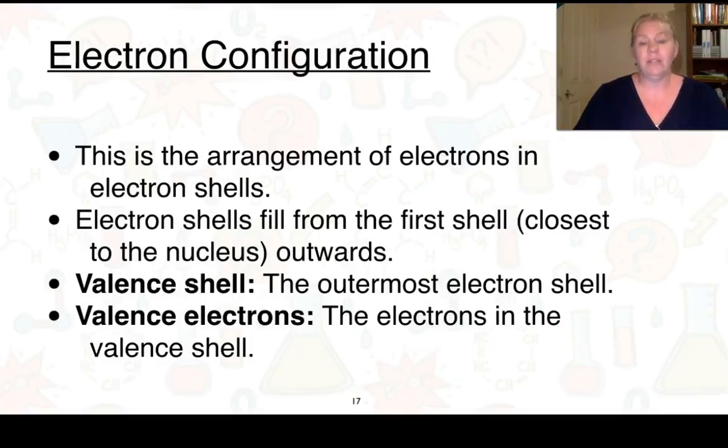The electron configuration is the arrangement of electrons in those electron shells. The electron shells fill from the first shell around that nucleus, and then they fill outwards. The electron shell on the outside is called the valence shell, and the electrons within that valence shell are called valence electrons.